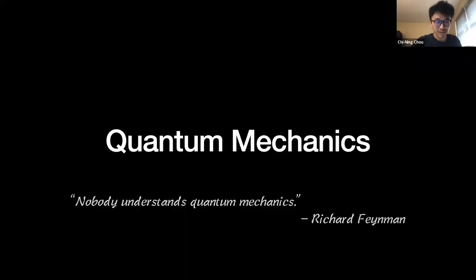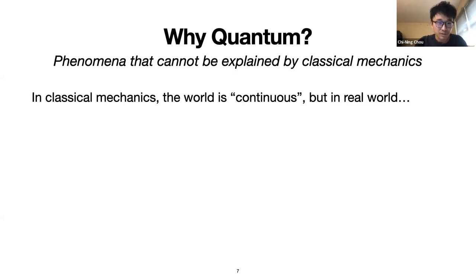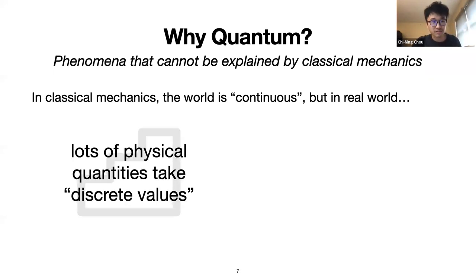Let's start with quantum mechanics, which is a theory about the microscopic world. The initial motivation for studying quantum mechanics — as a kind of replacement for what we saw before — is that there are phenomena that cannot be explained by classical mechanics. In classical mechanics, the world is continuous; we talk about different world views and geometrical space. But in the real world, people observe lots of discreteness.